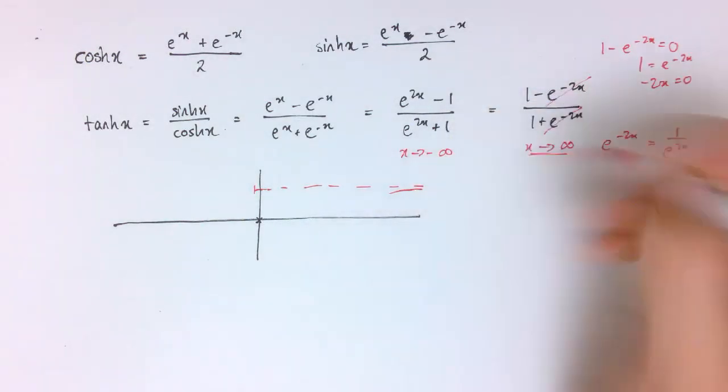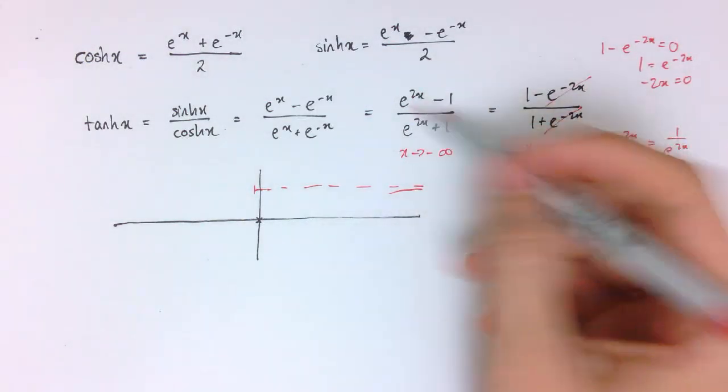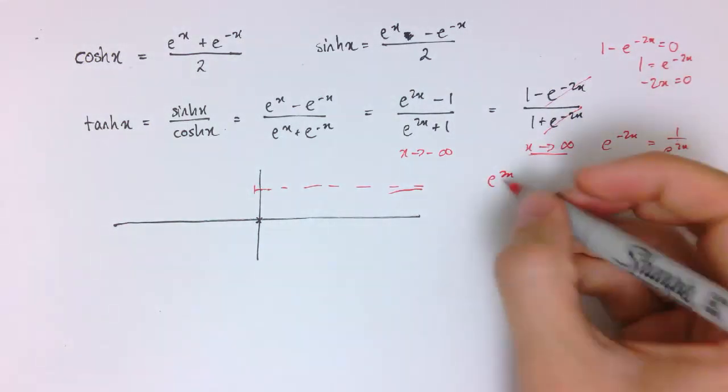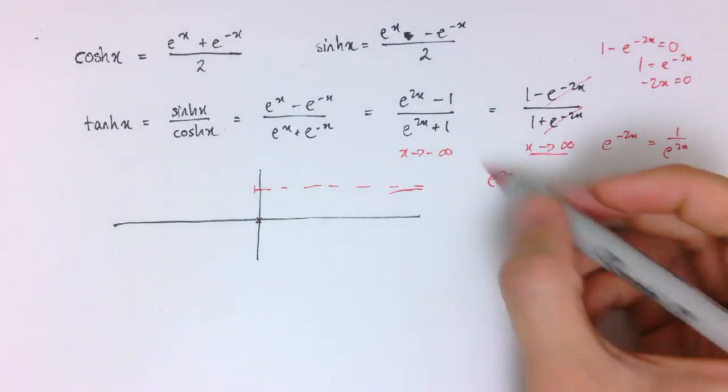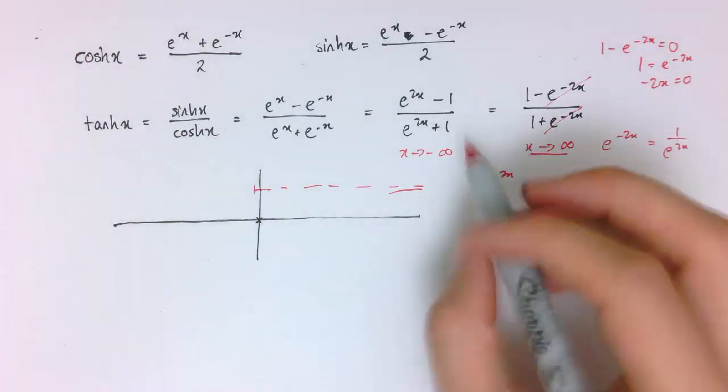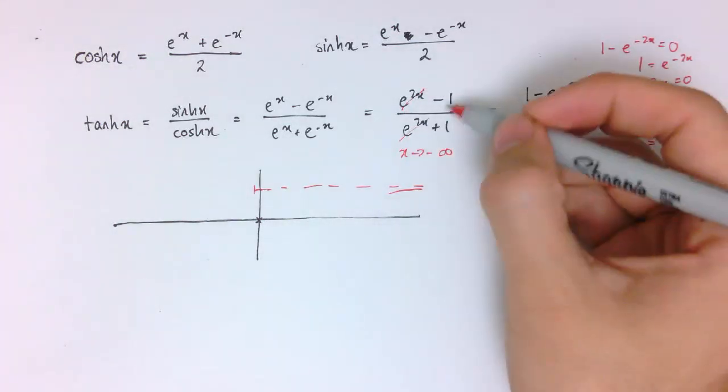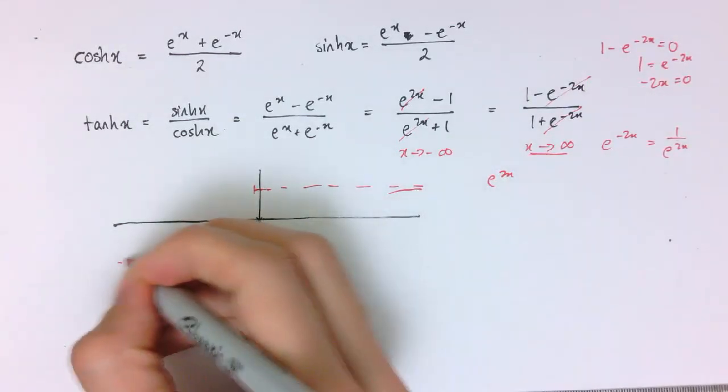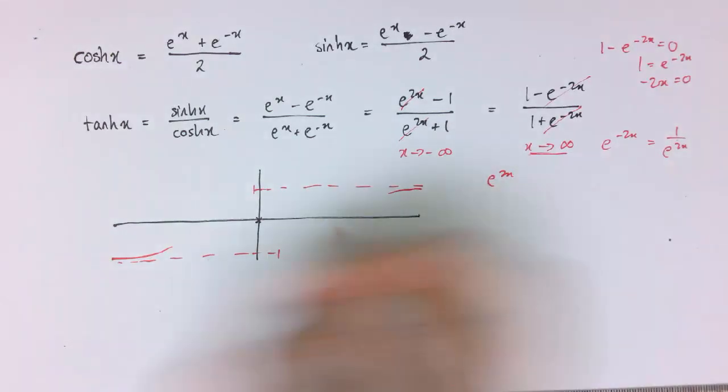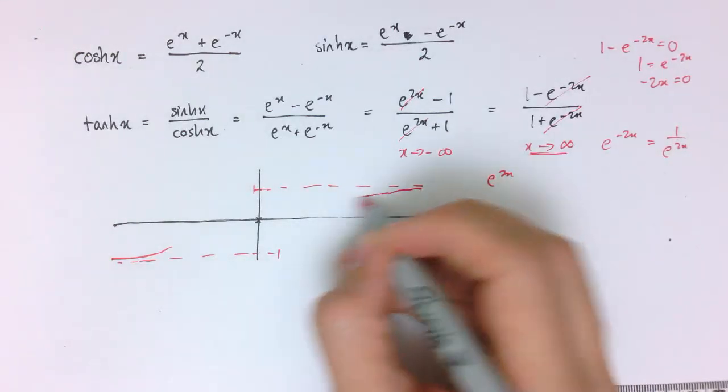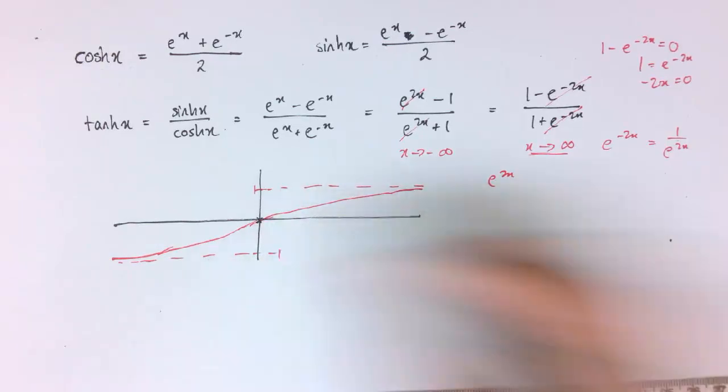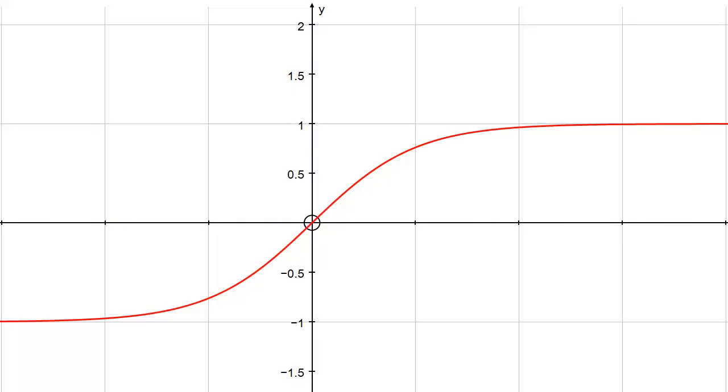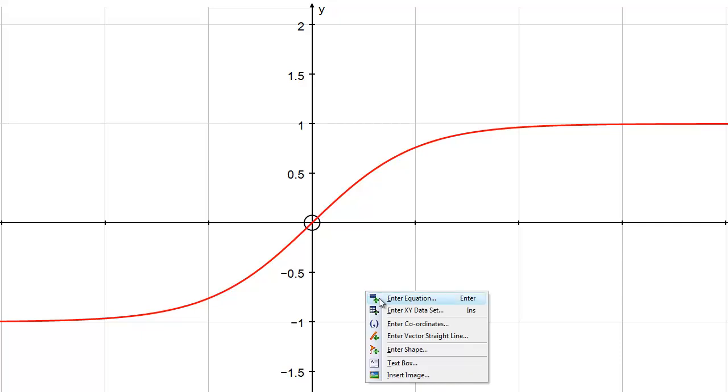Similarly, if I look at x tends to minus infinity, then in this form, e to the 2x, if x is negative, this is going to be like 1 over e to the 2x, and these terms are going to go to 0, so it'll go to minus 1. For very large negative values it comes in like this, and overall the graph looks something like that. That's y equals tanh x.